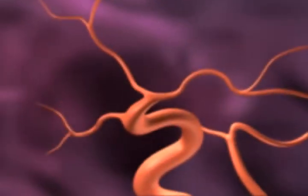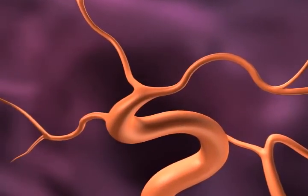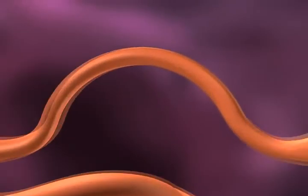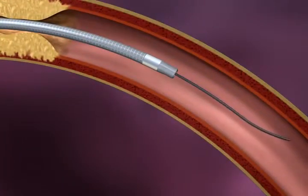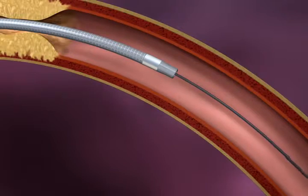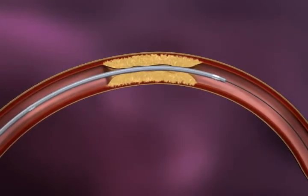The Wingspan Stent System is designed to access tortuous neurovascular anatomy. Use a .014 inch exchange length guide wire to cross the stenosed lesion. A microcatheter can be used to obtain access if desired.